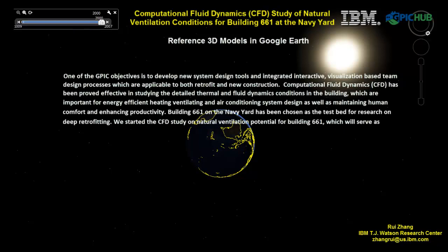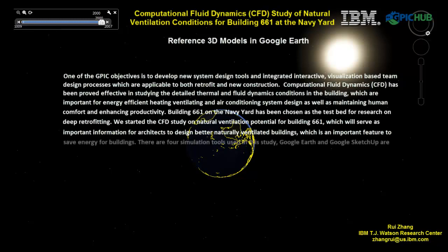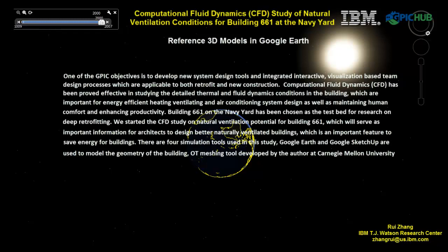We started the CFD study on natural ventilation potential for Building 661, which will share important information for architects to design better naturally ventilated buildings, which is an important feature to save energy for buildings. There are four simulation tools used in this study. Google Earth and Google SketchUp are used to model the geometry of the building. OT meshing tool developed by the author at Carnegie Mellon University was used to generate meshes, and ANSYS Fluent was used to conduct the simulation and visualize the results.